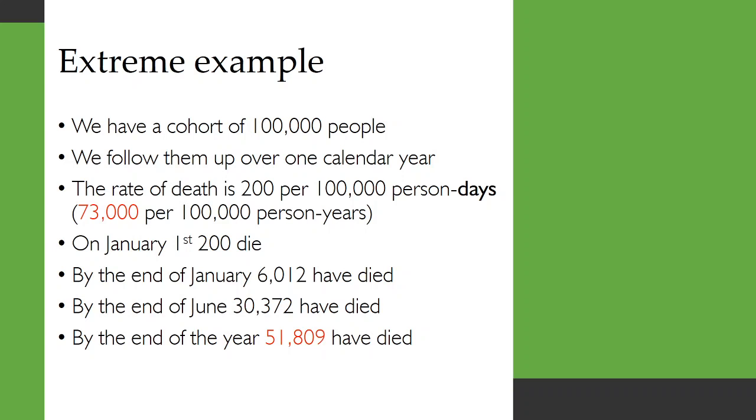Well, let's look at what that would be like. On January 1st, 200 would die. By the end of January, just over 6,000 would have died. By the end of June, over 30,000 would have died. And by the end of the year, nearly 52,000 people would have died. But notice that that is different from the 73,000 per 100,000 person-years, and we'll see why that is.